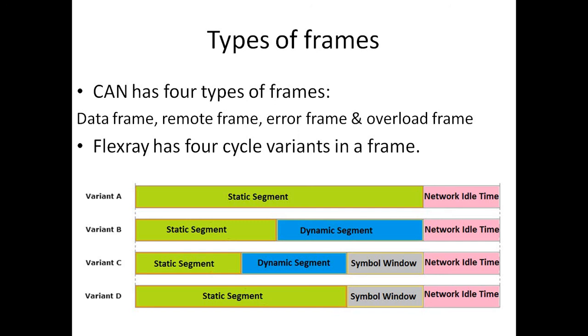FlexRay also has four different cyclic cycle variants of frame. Now you look at the picture. You have four different cycle variants. Variant A, where you have a static segment and you have a network idle time.